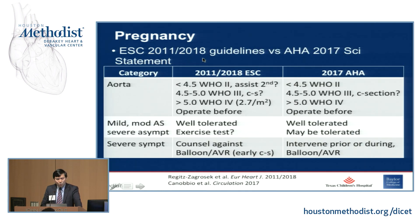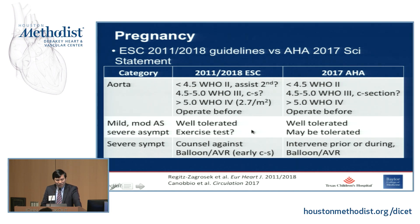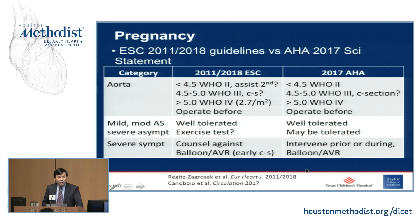Regarding pregnancy, the 2018 ESC and AHA guidelines run parallel: below 4.5 cm we watch; 4.5 to 5 cm we watch closely and individualize whether to recommend C-section; above 5 cm we strongly recommend operating beforehand. Mild-to-moderate aortic stenosis or severe asymptomatic stenosis is usually well tolerated. Counsel against pregnancy with severe symptomatic aortic stenosis. If caught mid-pregnancy, balloon aortic valvuloplasty or — in dire circumstances — aortic valve replacement in the second trimester can be considered; early C-section is usually recommended.